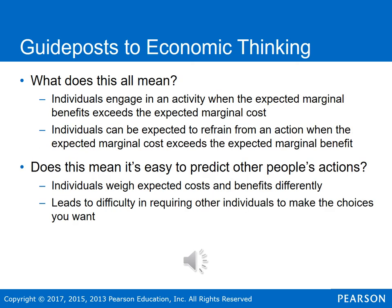Putting this together: individuals engage in an activity when the expected marginal benefit exceeds the expected marginal cost. The individual can be wrong, so it's the expected marginal benefit and expected marginal cost. Individuals refrain from an activity when the expected marginal cost exceeds the expected marginal benefit — obviously, if the cost of doing something is more than the benefit you receive, you won't engage in that activity.